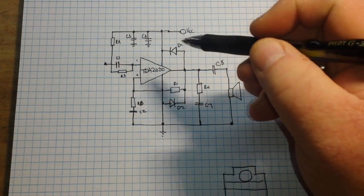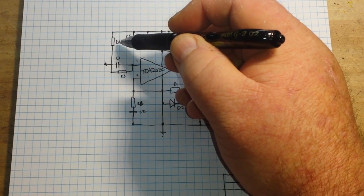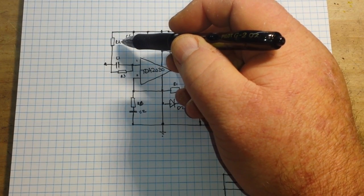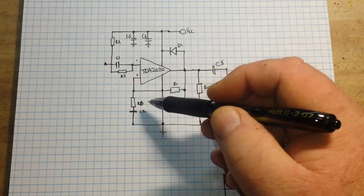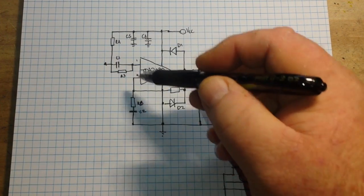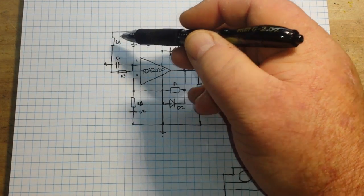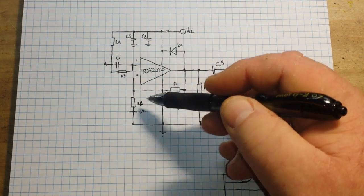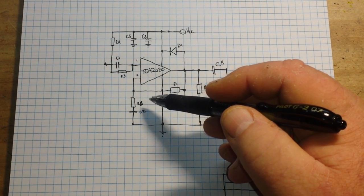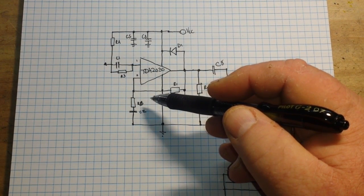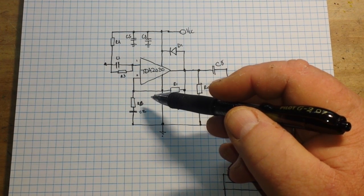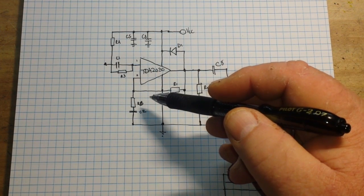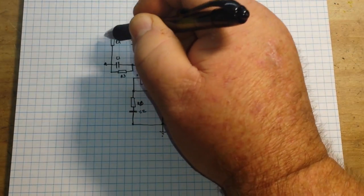So the first thing I want to talk about are the resistors. If we start with RA and RB, these are our inverting and non-inverting input biasing. Now we're going to run these at 100k each.